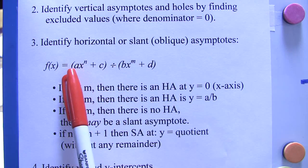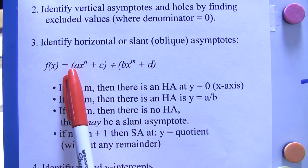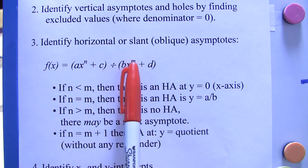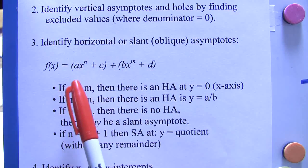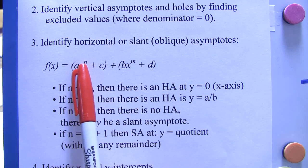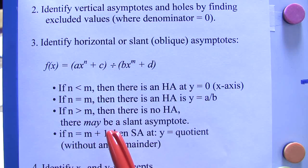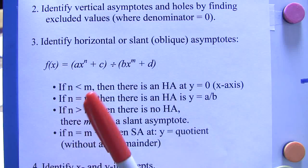Here, I have made an expression ax to the n plus c divided by bx to the m plus d. And calling these n and m are leading exponents. So there are four things to keep in mind here.